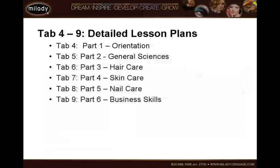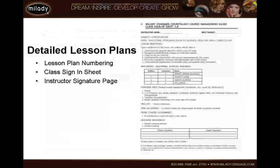Tabs four through nine contain the detailed lesson plans, divided up based on the way the textbook is divided. Part one behind tab four contains your orientation lessons: chapter one orientation, chapter two life skills, chapter three professional image, chapter four communication. Tab five is your sciences, tab six is your hair care, tab seven is skin care, and so on. The lesson plans are really the bulk of the course management guide. The purpose is to provide you lesson plans that are already developed so you don't have to spend hours recreating your own.